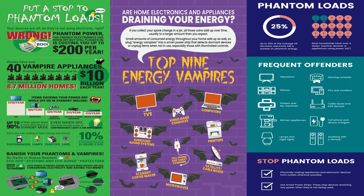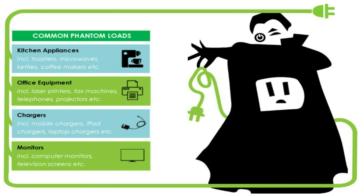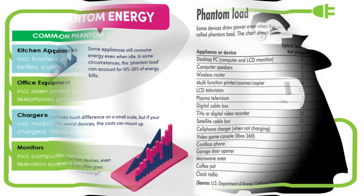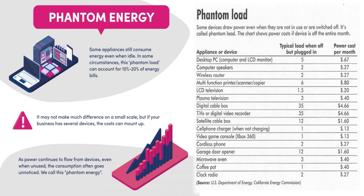How to get rid of phantom load. One: turn off everything if you're not using it. To make this easier, put your appliances and devices on power strips so you can turn off several at a time. Two: unplug your microwave, coffee maker, and other kitchen appliances. Set your computer and laptop on sleep mode or shut them down. Three: add smart power strips — as their name indicates, these strips turn off appliances that aren't being used. They also have the ability to maintain power to devices that need to stay powered on.